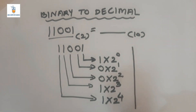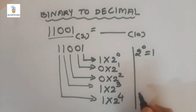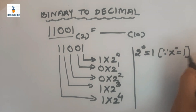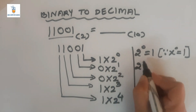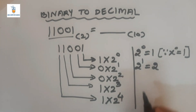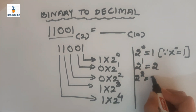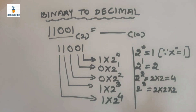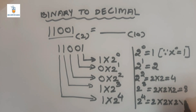From right to left as we move through the digits, the weight of 2 goes on increasing: 2 raised to 0, 2 raised to 1, 2 raised to 2, 2 raised to 3, 2 raised to 4, and so on. Any number to the power 0 is always equal to 1, so 2 raised to 0 is 1. 2 raised to 1 is 2; 2 squared is 4; 2 cubed is 8; and 2 raised to 4 is 16. These are the powers of 2, or weights of 2, and they go on increasing as we move from right to left in the binary number.